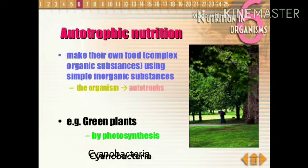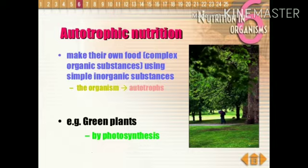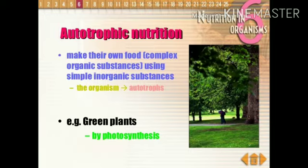Auto means self and trophic means food. It means that plants which make their own food in the form of glucose with the help of carbon dioxide, water, sunlight, and chlorophyll are called autotrophs. The process of making food is called autotrophic nutrition. Other than all green plants, cyanobacteria are also called autotrophs.